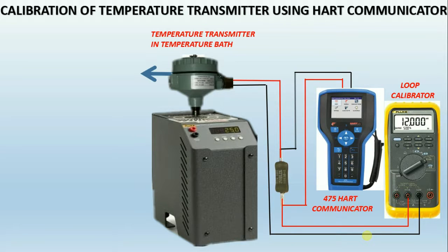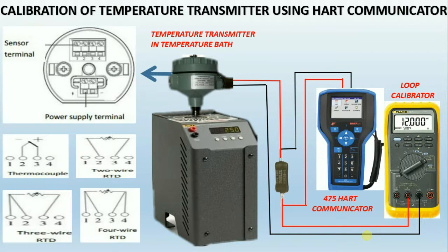Now we will see how to calibrate a temperature transmitter using HART. Connect the loop power to the temperature transmitter as shown in the elevated view. Then connect the temperature element to the transmitter sensor connection terminals shown in the elevated view, according to the configuration done in HART.